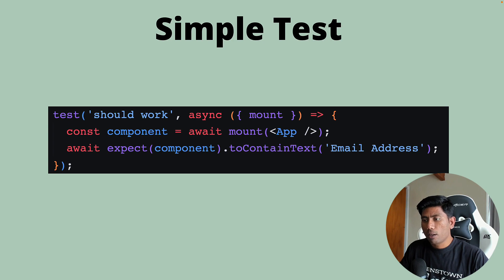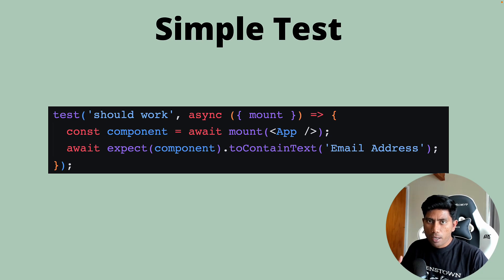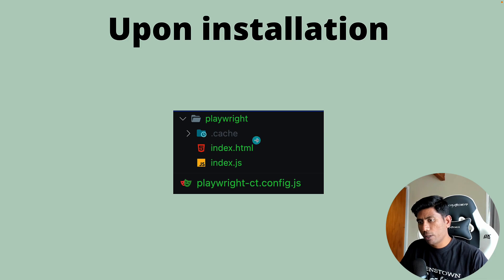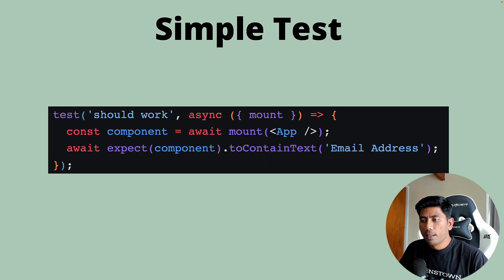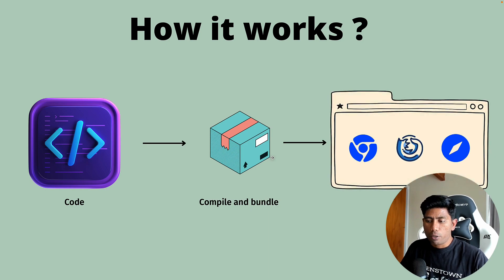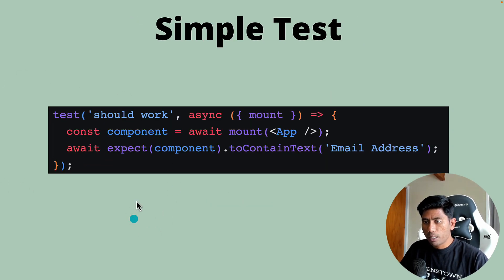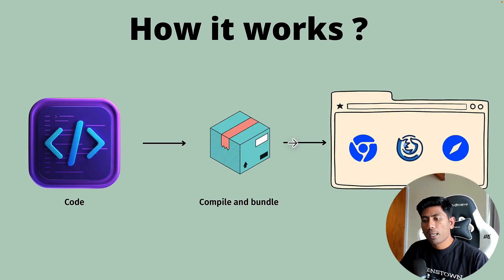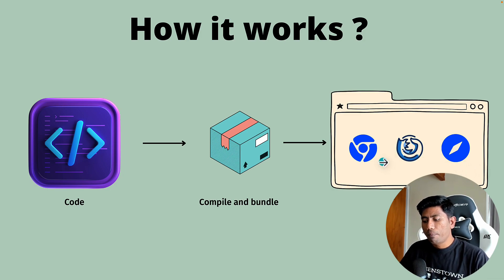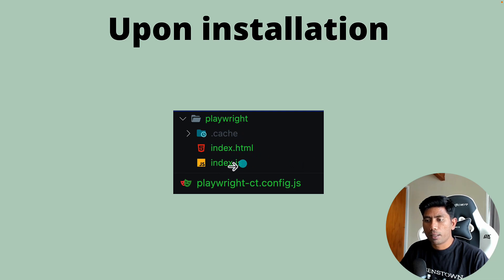You can perform testing on that particular component. What mounting means is that you are loading a component of your application into Playwright's context using the index.html file and the index.js file — this is where the magic happens behind the scenes. Once you do the mount, it compiles the component, bundles it, and then runs it on the browser via those two pages.